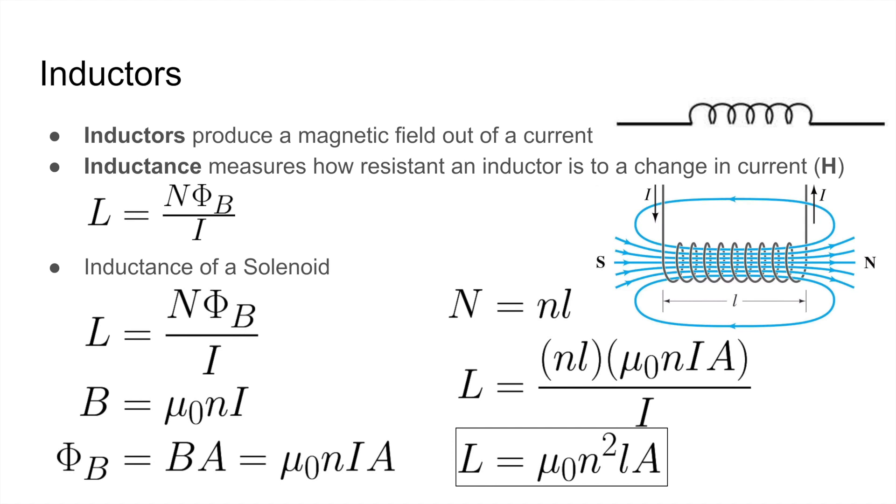Next, we'll move on to inductors. So inductors produce a magnetic field out of a current. An inductance measures how resistant an inductor is to a change in current. In a circuit, an inductor is represented by the diagram on the top right. And the equation for inductance is given by N times the magnetic flux over I. Let's see if we can find an expression for the inductance of a solenoid, which is the main inductor that you'll encounter.